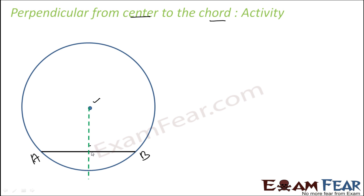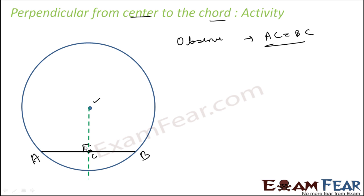You will observe that at the point of intersection, AC is equal to BC. We can try this 100 times and we will always observe that AC is always equal to BC. So what you have done is drawn a circle and a chord, then drawn a perpendicular passing through center O to chord AB. You observe that this perpendicular from the center will always bisect the chord AB.